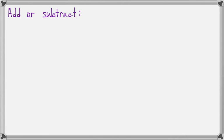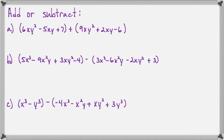For our next few examples let's work on these problems. We've got 6xy² - 5xy + 7 plus 9xy² + 2xy - 6. I notice that there's a plus sign between my polynomials so I can just combine the like terms.